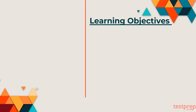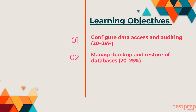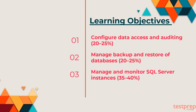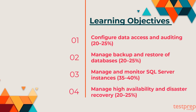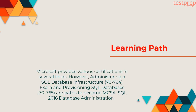The objectives for the 70-764 exam are as follows. First, configure data access and auditing, 20–25%. Second, manage backup and restore of databases, 20–25%. Third, manage and monitor SQL Server Instances, 35–40%. Fourth, manage high availability and disaster recovery, 20–25%. Microsoft provides various certifications in several fields; however, administering a SQL Database Infrastructure 70-764 and provisioning SQL Databases 70-765 are paths to become MCSA SQL 2016 Database Administration.